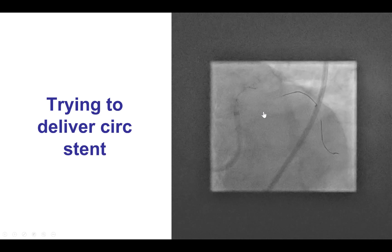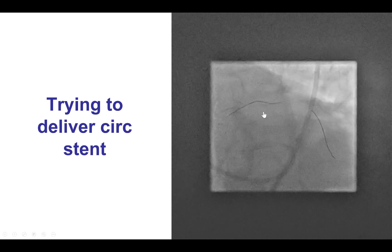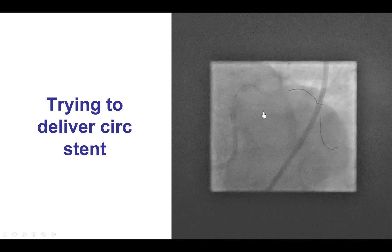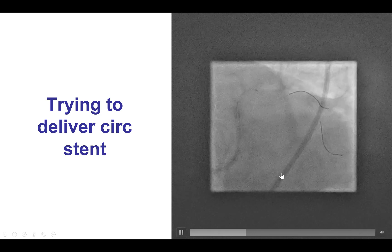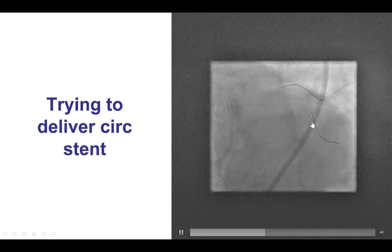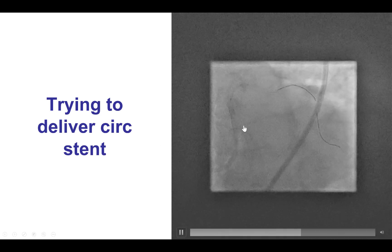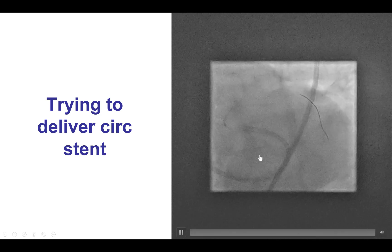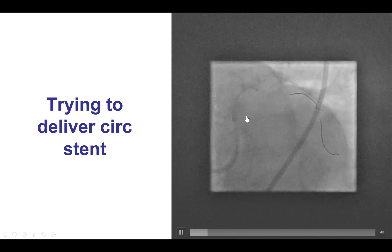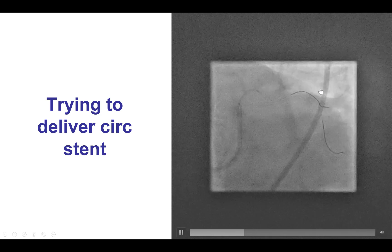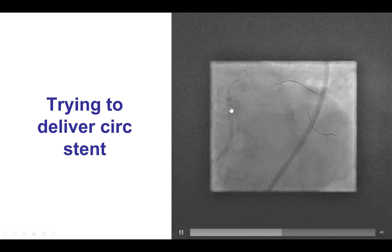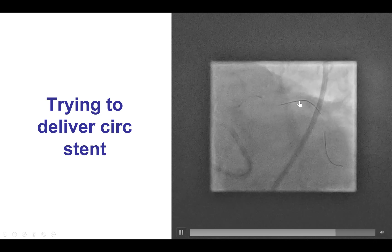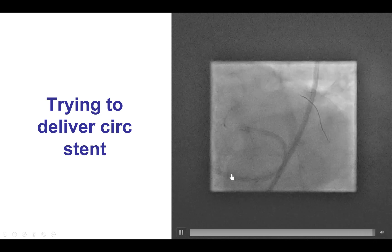So now our plan is to advance a stent into the circumflex. And this is what can happen sometimes — even though we did have an 8-French femoral guide, which is very supportive (that's an EBU-3.75 guide) — if one pushes too much, even with having two wires into the vessel, then one can lose everything: the guide position, which then pulls the wires back.